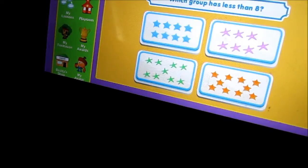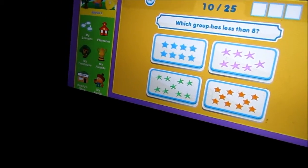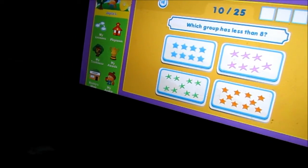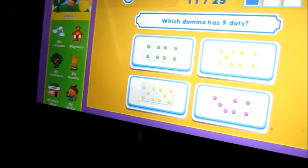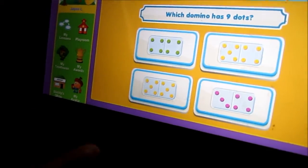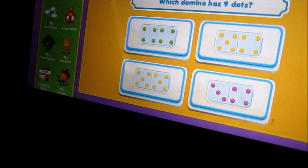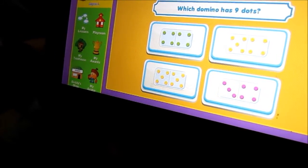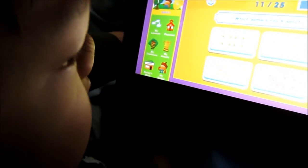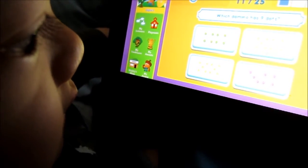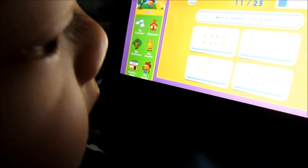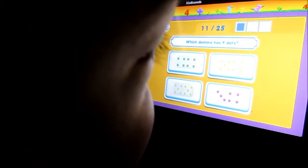Which group has less than eight? One, two, three, four, five, six, seven, eight. This one? Which one has less than eight? One, two, three, four, five, six, seven, eight. One, two, three, four, five, six, seven, eight, nine. This one.